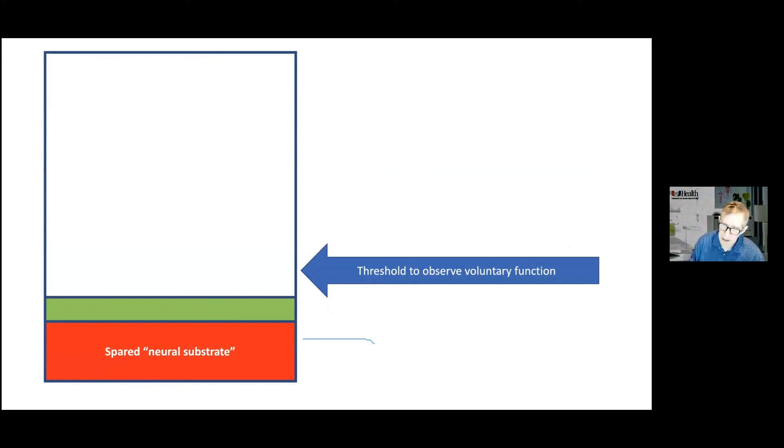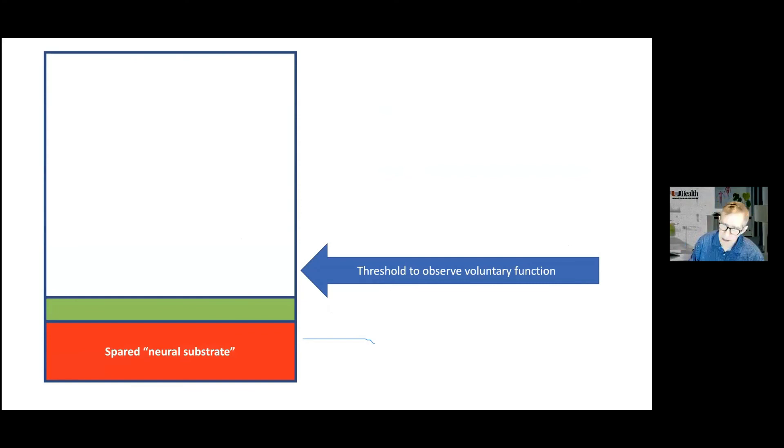And we have not crossed that boundary yet. But again, reminding you about neuromodulation. Now you have same spared neural substrate, you have brought in the transplant. And now if you layer on top of that a neuromodulation entity like transcutaneous or epidural stimulation, then you do cross that threshold to observe voluntary function. So the idea that this spared neural substrate isn't important is being seriously challenged by new information. I think that's the last slide.